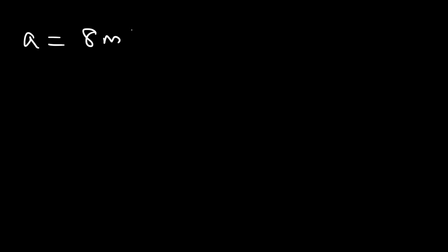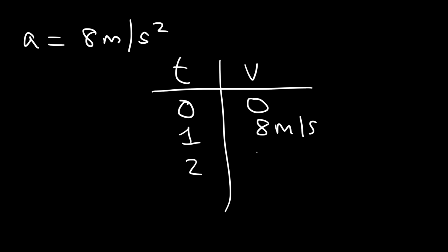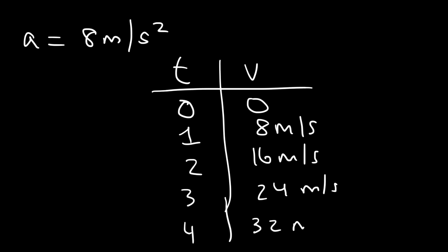If the acceleration is 8 meters per second squared, that means every second the velocity is changing by 8 meters per second. Let's make a table of time and velocity: after one second, speed is 8 m/s; two seconds, 16; three seconds, 24; four seconds, 32. So every second the velocity is increasing by 8. That's the main idea behind acceleration — it tells you how fast the velocity is changing.